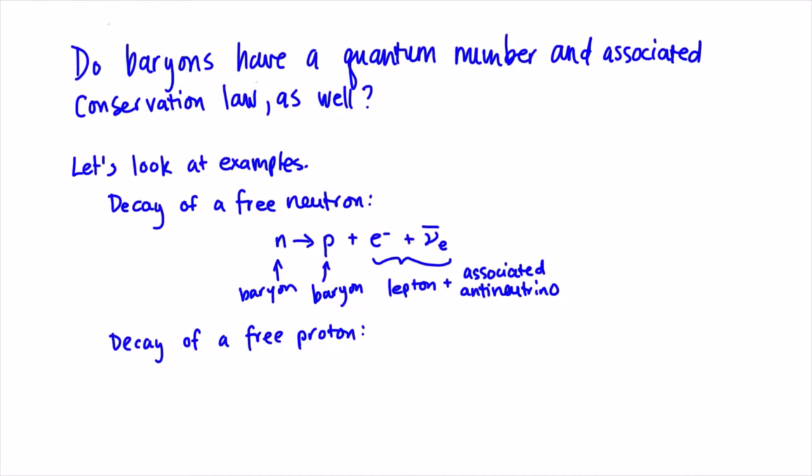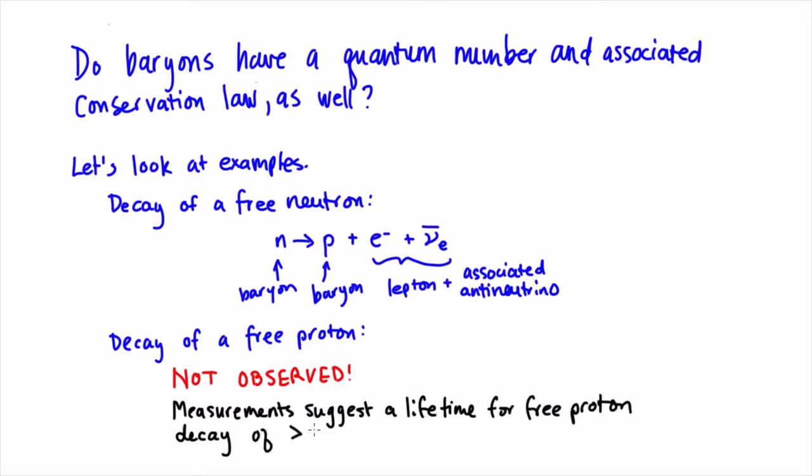So what do we observe? All experiments have thus far been consistent with the idea that the proton is stable, meaning it doesn't decay. We can't rule out the possibility entirely. Measuring that something doesn't occur is akin to measuring zero, and that's a very challenging task indeed. But current measurements suggest that the mean lifetime of a proton would have to be longer than 10 to the 29 years if it is indeed unstable.